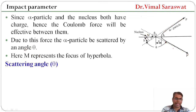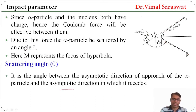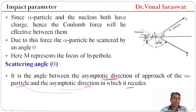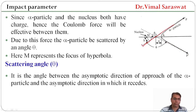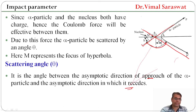The scattering angle theta is the angle between the asymptotic direction of approach of the alpha particle and the asymptotic direction in which it recedes. This is the direction before collision and this is the direction after collision, if there is no mutual reaction. The angle between these two asymptotic directions, theta, is our scattering angle.